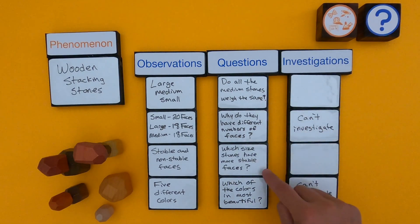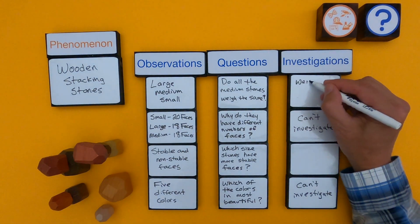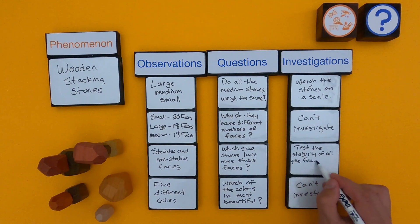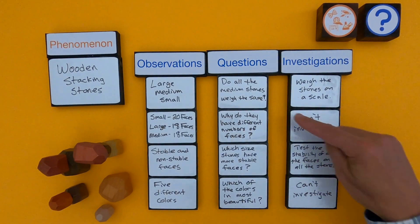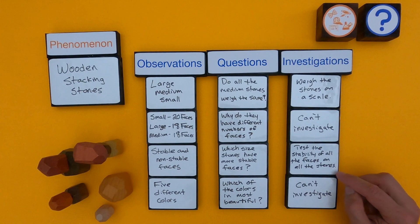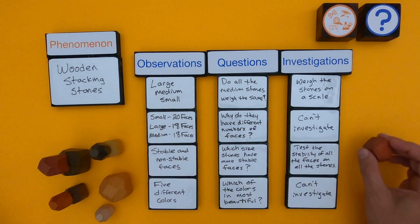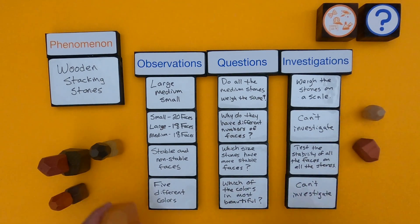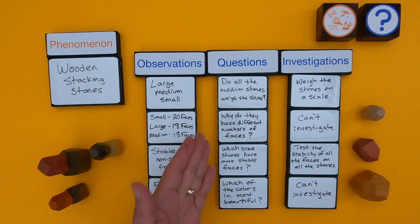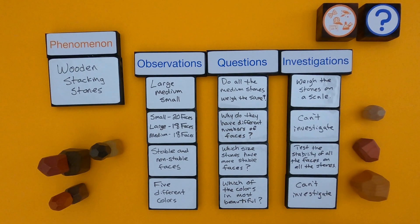For the questions I could investigate, I'll come up with a simple investigation for each. To answer whether all the medium stones weigh the same, I could put them on a scale or an electric balance. For which size stones have more stable faces, I could just test them — try all the different faces of the small, medium, and large stones. The idea with observational investigations is you always start with a phenomenon, make observations, turn those into questions, and then figure out which ones you can investigate.